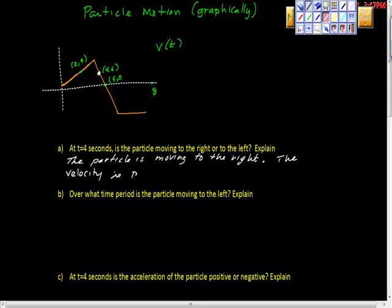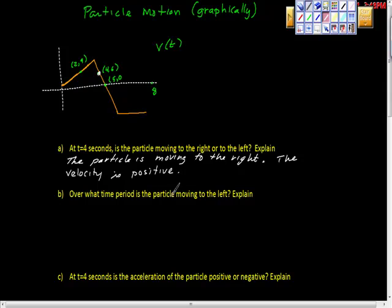The velocity is positive. Remember that when doing these questions on the AB exam, the particle is moving along the x-axis, so we only have horizontal movement. If we have positive velocity, we know it's moving to the right.